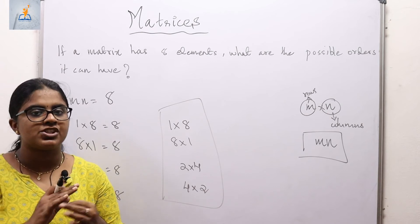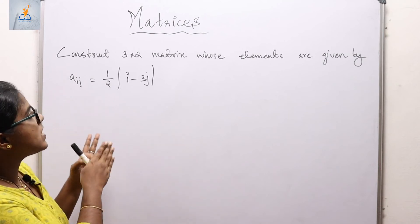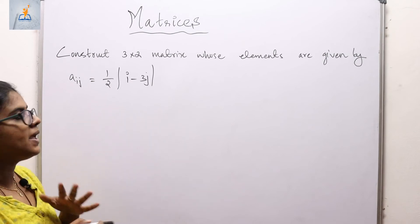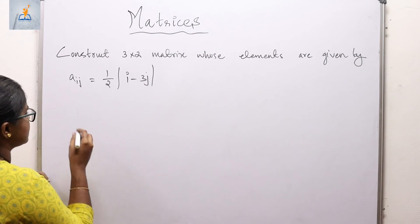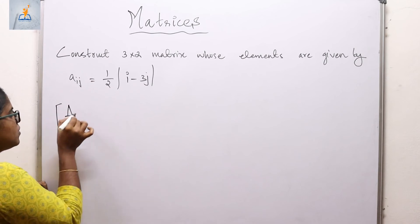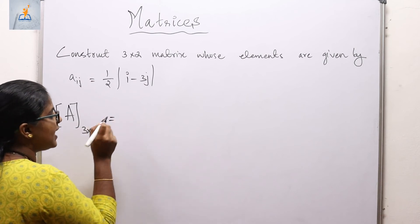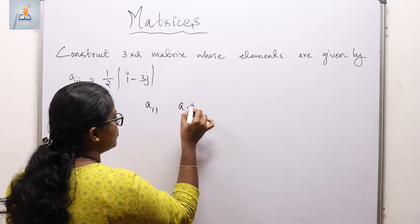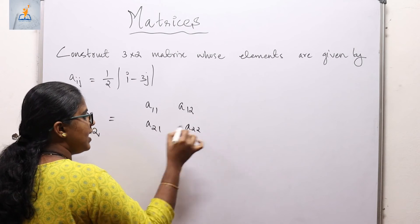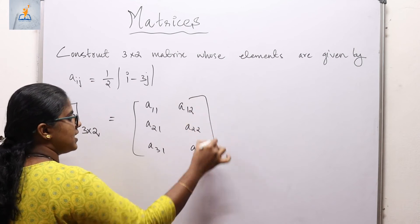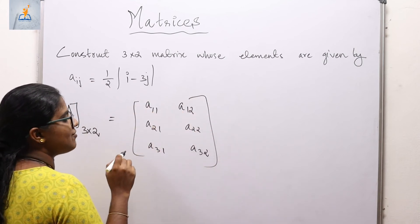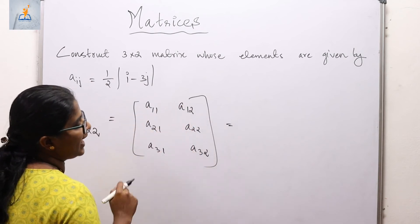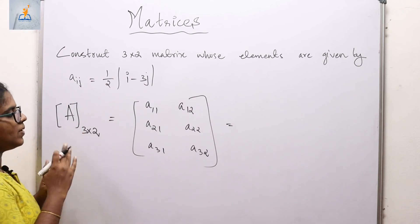Now, construct a 3 by 2 matrix whose elements are given by aᵢⱼ = ½|i − 3j|. We need to construct matrix A of order 3 by 2, with 3 rows and 2 columns. The general form is: [a₁₁, a₁₂; a₂₁, a₂₂; a₃₁, a₃₂]. We need to find each of these six elements using the given formula.